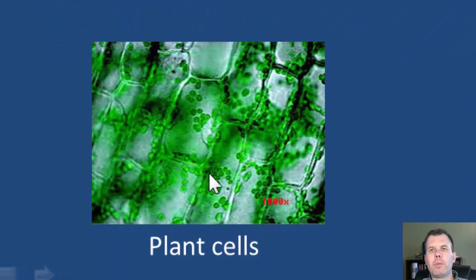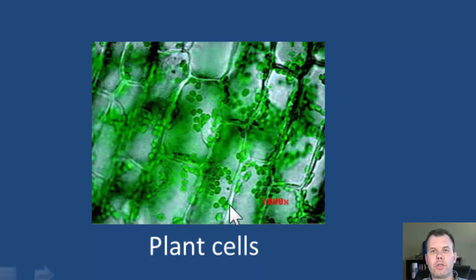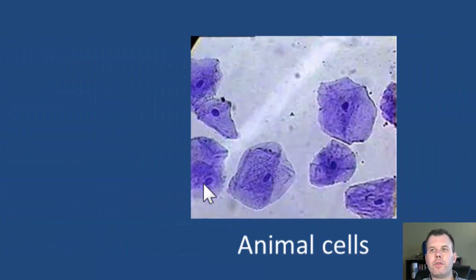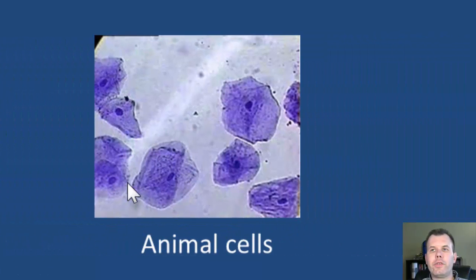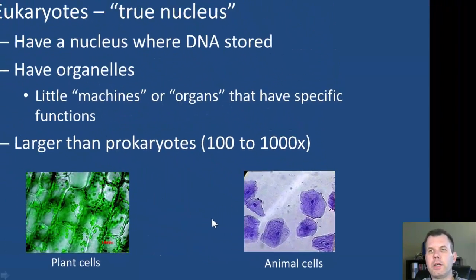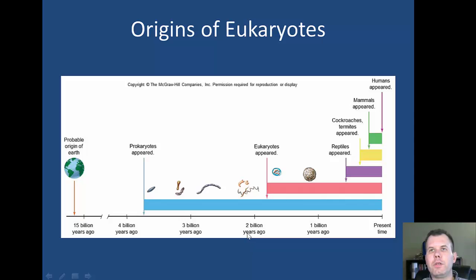We're going to talk about plant cells and animal cells later on. The big difference is really the structure: cell walls and chloroplasts in plant cells, versus just the cell membrane and no chloroplasts in animal cells.